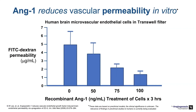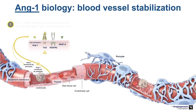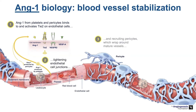In a human brain microvascular endothelial cell model, as angiopoietin 1 levels are increased along the x-axis, permeability is concordantly decreased. So putting this together: angiopoietin 1 comes from platelets and pericytes and binds to and activates the TIE2 transmembrane receptor on endothelial cells, leading to tightening of endothelial cell tight junctions and recruitment of pericytes, resulting in maintenance of vascular stability and homeostasis.